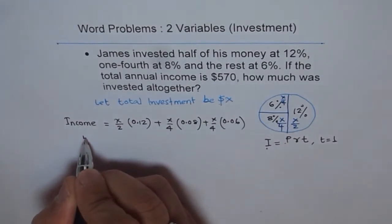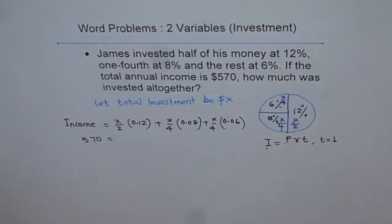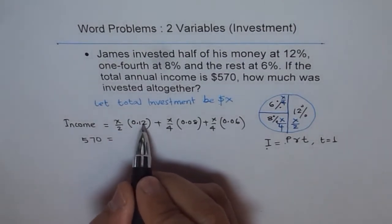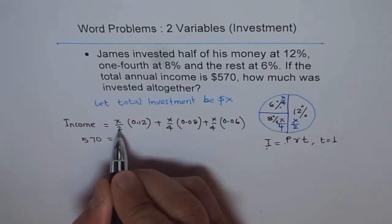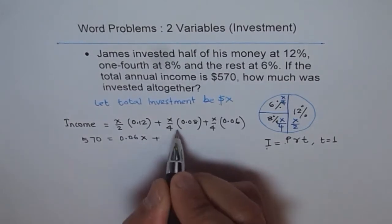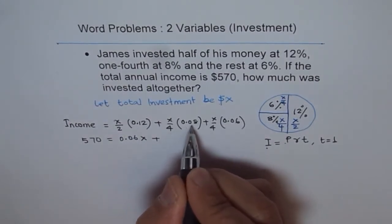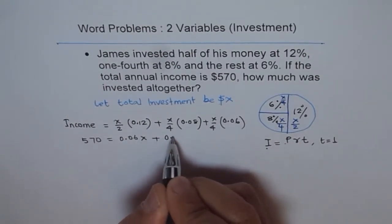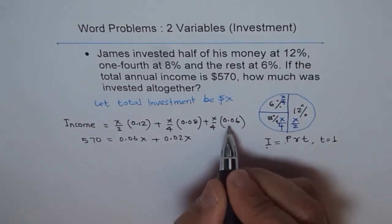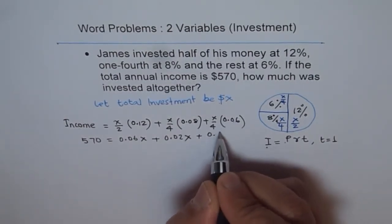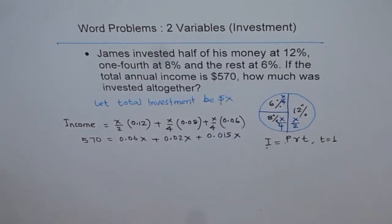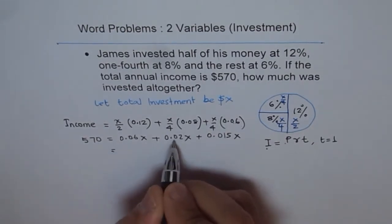So that is the total income. Now it is given to us that the total income is $570, so we can write down here 570 dollars equals all this, and now we can use calculator and figure it out. Let's divide this by 2 and we get 0.06X, plus when you divide this by 4 you get 0.02X, and when you divide this you get 0.015X.